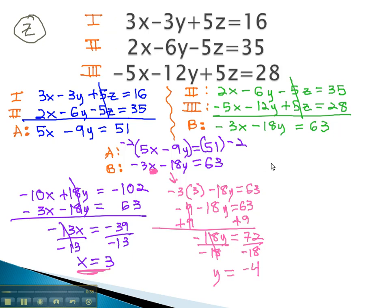Equation 1 says 3x, x we just found out was 3, minus 3y, y we just found out was negative 4, plus 5z equals 16. Multiplying out, we get 9 plus 12 plus 5z equals 16. Combining like terms, we find out that 21 plus 5z equals 16.